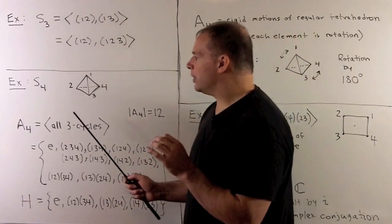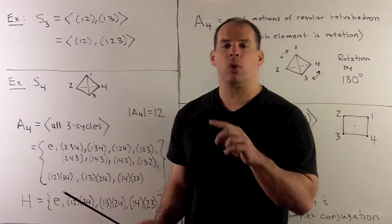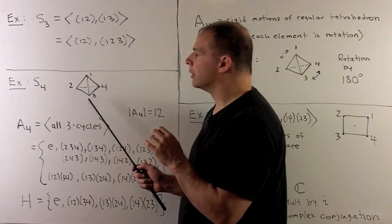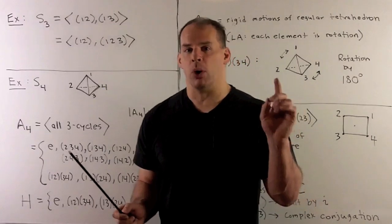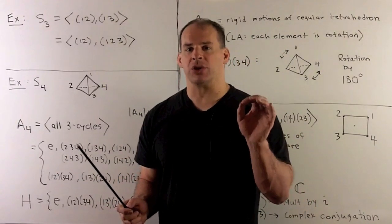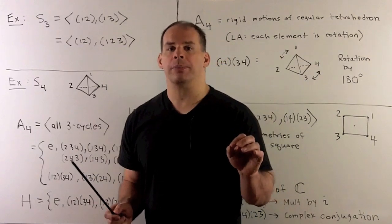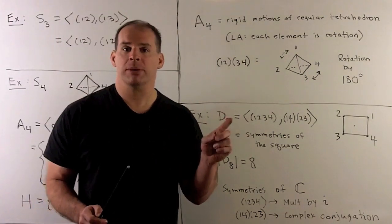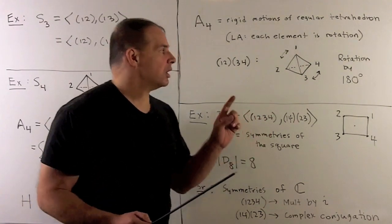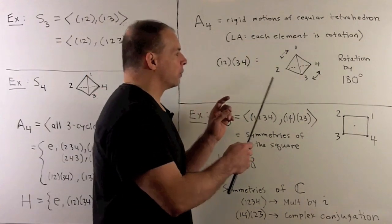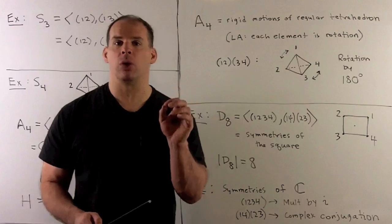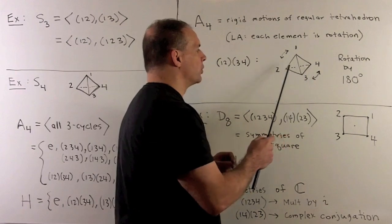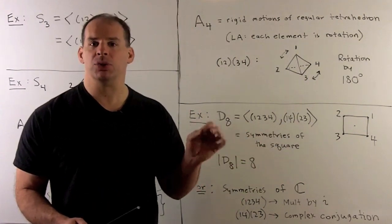How should we think of A4? A4 is a subset of the symmetries of the regular tetrahedron consisting of the rigid motions — those symmetries that don't turn the tetrahedron inside out. A result from linear algebra tells us each rigid motion is a rotation. For example, the 3-cycle (2 3 4) fixes vertex 1 and sends 2 to 3, 3 to 4, and 4 to 2 — a rotation in that plane by two-thirds pi.